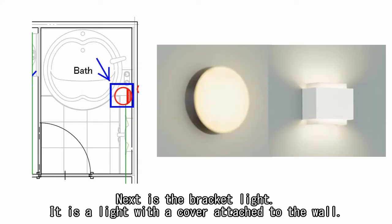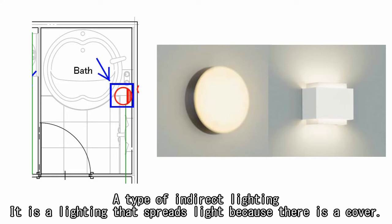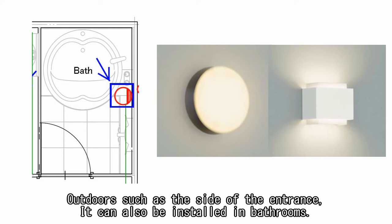Next is the bracket light. It is a light with a cover attached to the wall, a type of indirect lighting. It is a lighting that spreads light because there is a cover. Outdoors such as the side of the entrance, it can also be installed in bathrooms.